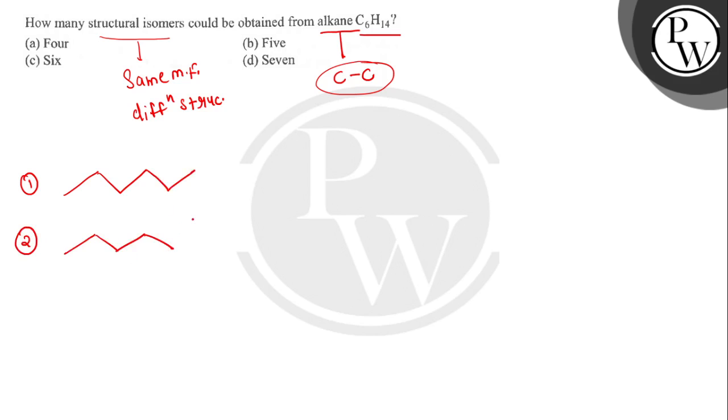The third isomer will be when we have five carbon atoms in the principal carbon chain but with the methyl group attached at the third position. The next isomer will be when we have four carbon atoms in the principal carbon chain.